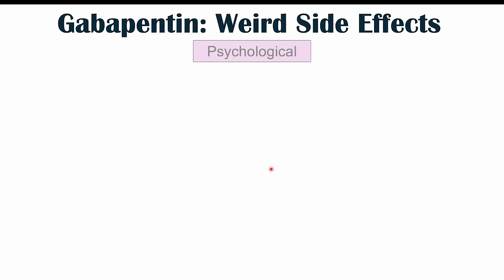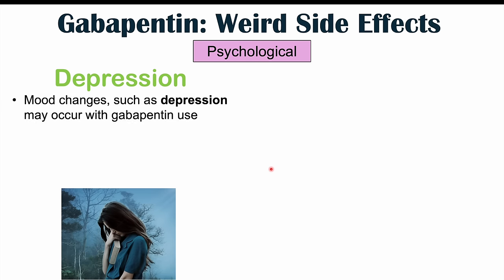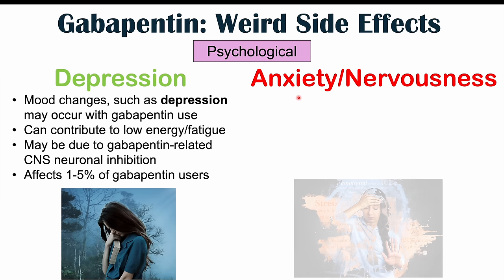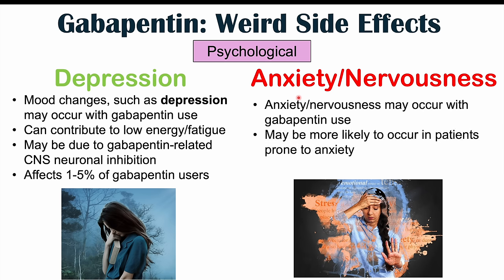The next group of side effects are psychological. These include depression — mood changes, especially depression — which may occur with gabapentin use, contributing to low energy and fatigue. This may be due to gabapentin-related central nervous system neuronal inhibition, as suppressed neuronal activity can lead to a lower mood. This affects 1% to 5% of gabapentin users. Anxiety and nervousness can also occur, and are more likely in patients already prone to anxiety.